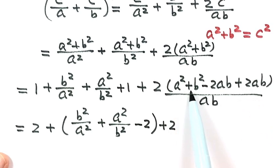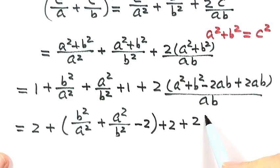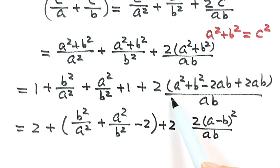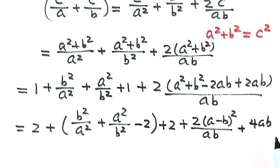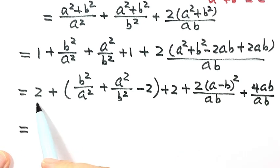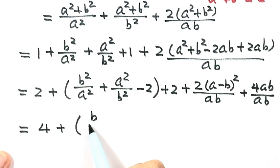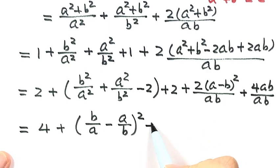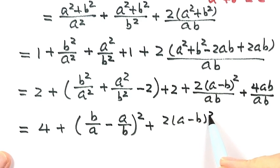The first three terms form a complete square: (b/a - a/b)². Combining the remaining terms: 2 + 2 = 4, and then 4ab/ab simplifies to 4. So these two combine together to give 4. Then the complete square term is (b/a - a/b)², and combining 4 + 4 gives 8. So the expression equals (b/a - a/b)² + 8.